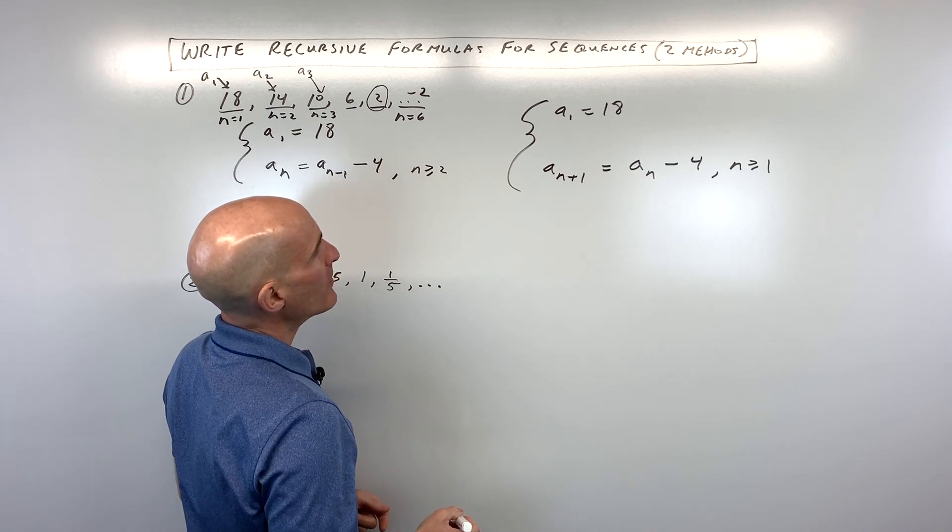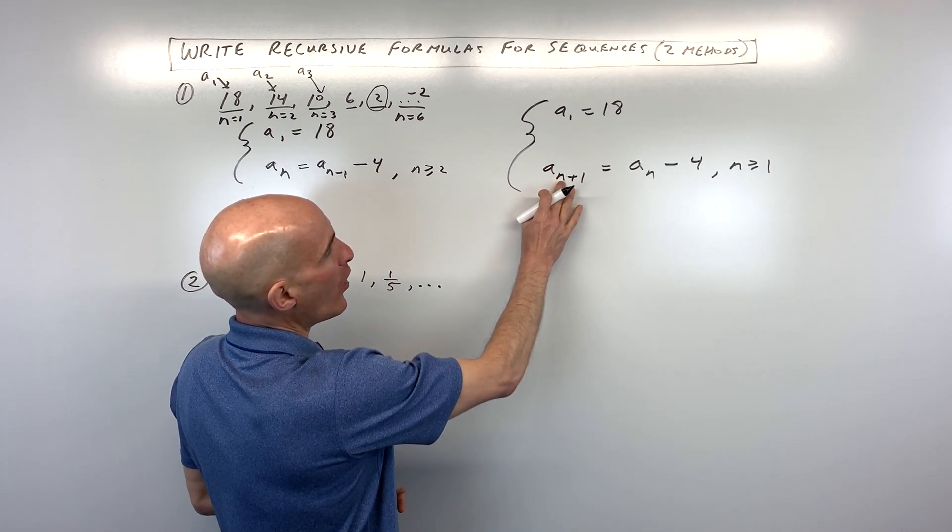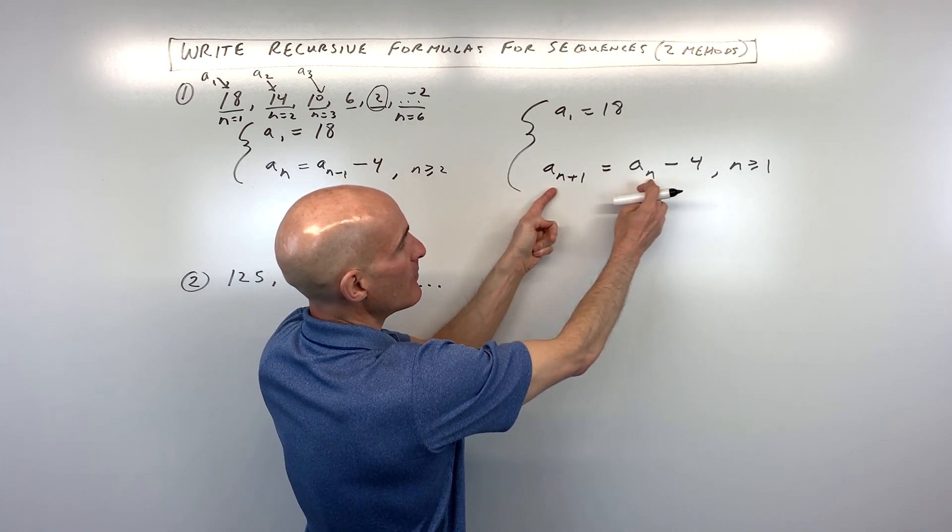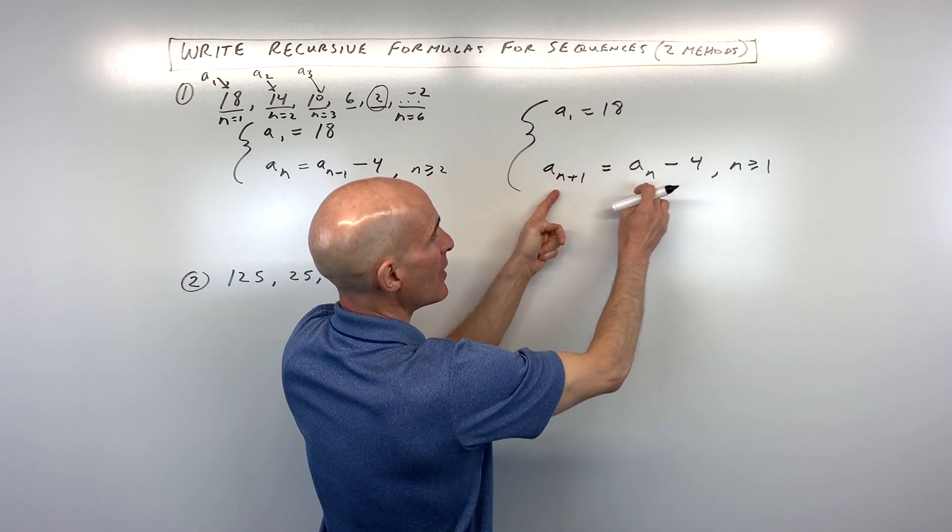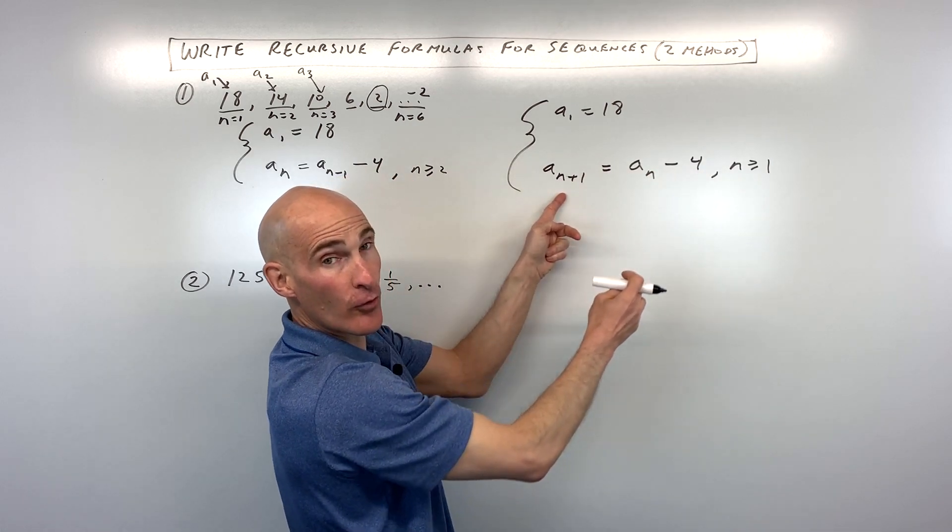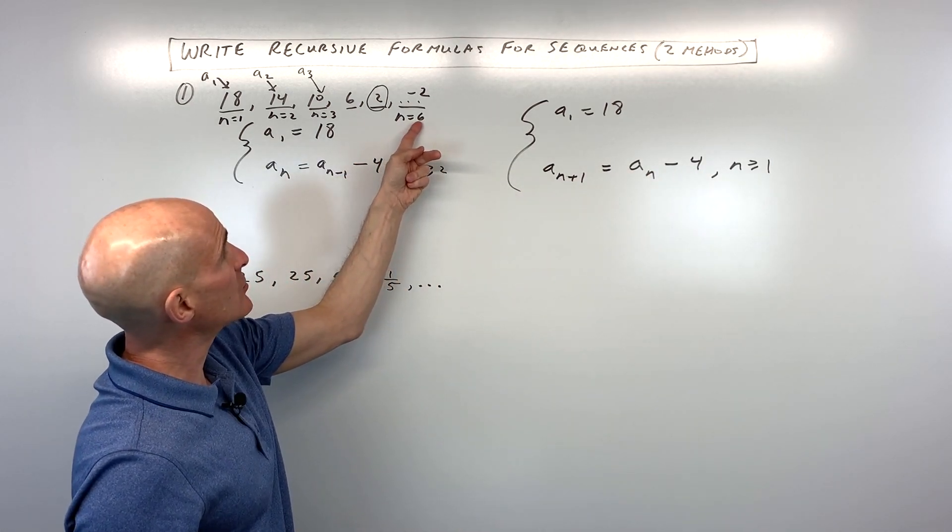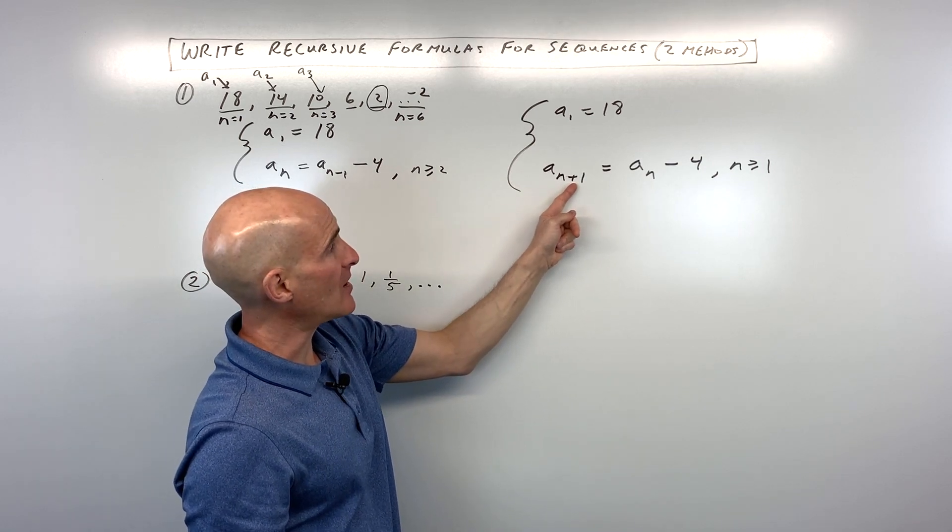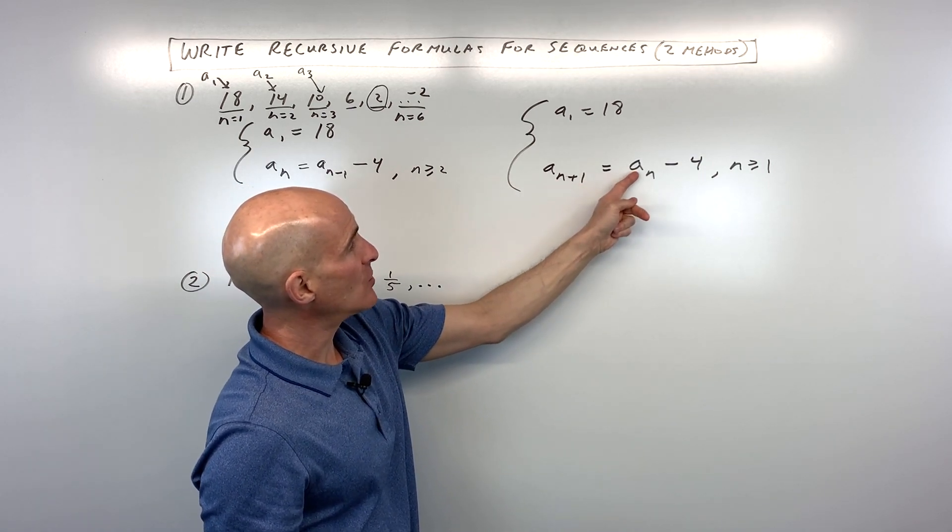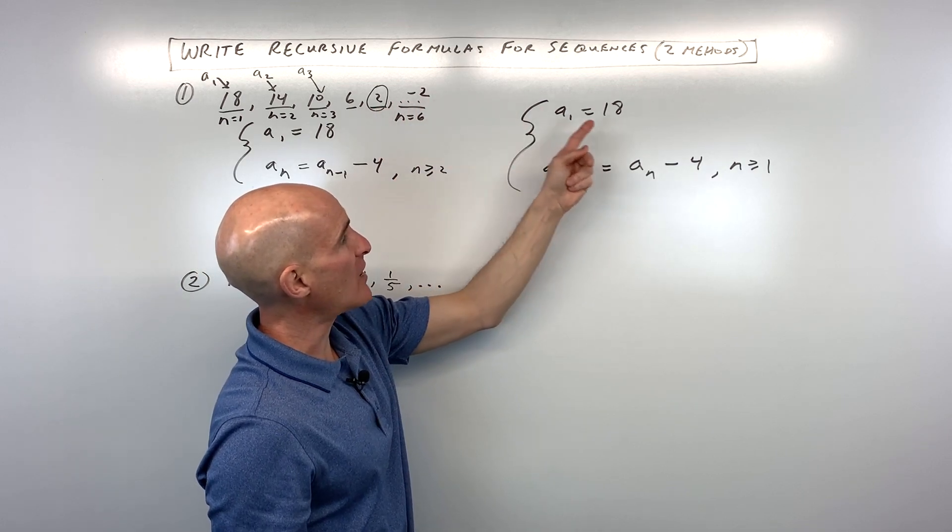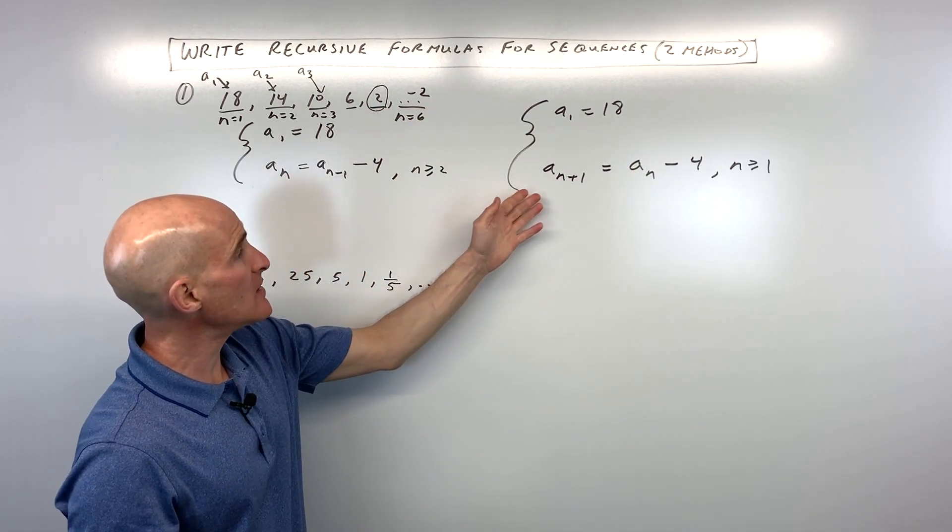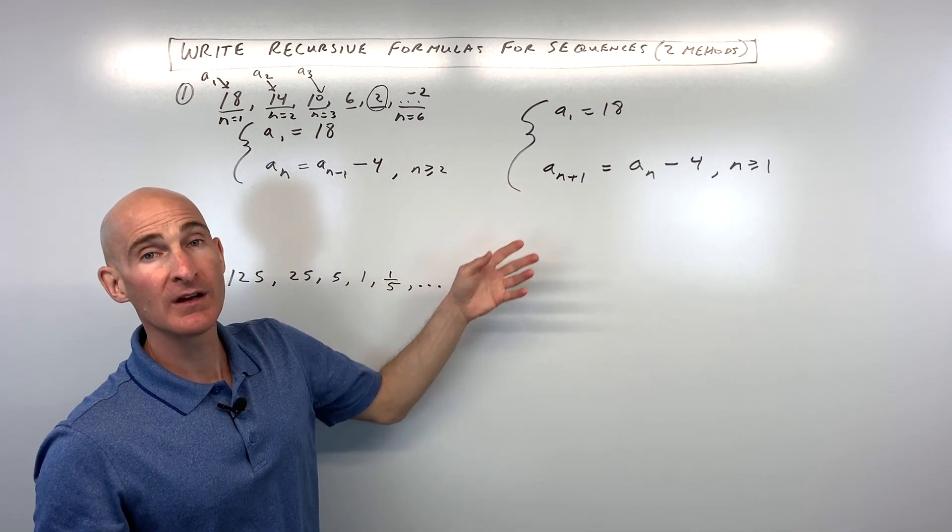So basically, this is like if you were to put 1 in here, 1 plus 1 is 2, okay? So you're finding the value of the second term. But remember how we said n equals 1. So you take the value of that first term, and you subtract 4. If you wanted to find the sixth term, in order for this to be 6, n would have to be 5, right? 5 plus 1 is 6. So a sub 5, that's the value of the fifth term. You subtract 4, and you get the next term. So either method, whichever one you prefer, will work.